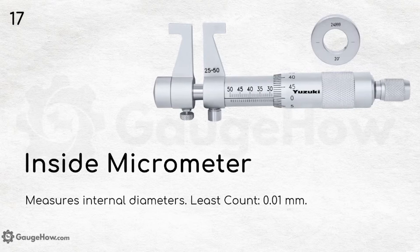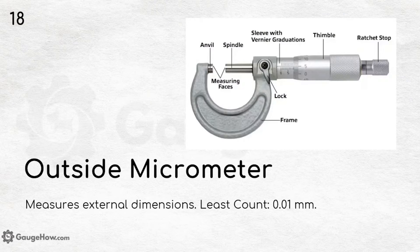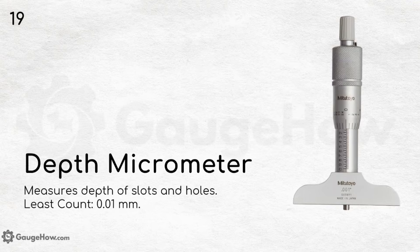Inside micrometer measures internal diameters with a least count of 0.01 mm. Outside micrometer does the opposite — it measures external dimensions — also with a least count of 0.01 mm. Depth micrometer measures the depth of slots and holes, again with a least count of 0.01 mm.